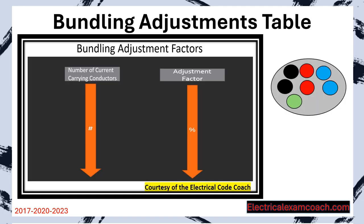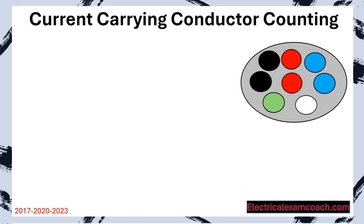Up until this point we've had all hot conductors inside of our conduit. But what happens if we add in a neutral? Is it considered a current carrying conductor? What about grounding conductors — are they considered current carrying conductors? Let's learn how to count conductors now. We're only going to be counting the current carrying conductors. You may get a question on your exam that gives you the number of conductors — that's easy, you're going to go to the tables and do the math. But you may get a question that asks you in a scenario of wires how many of them are current carrying conductors.